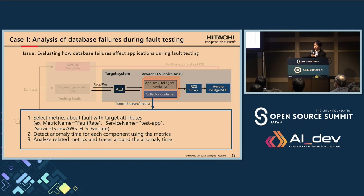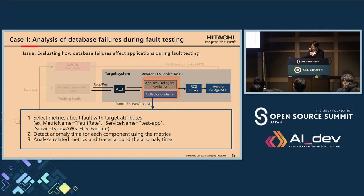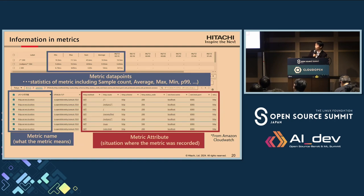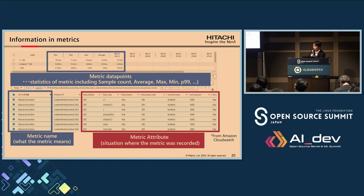The process of analyzing telemetry consists of three main steps. First, select metrics with target attributes and retrieve them from the management platform. Next, use these metrics to detect anomaly times for each component. Then analyze the related metrics and traces around the detected anomaly times in detail. Metrics consist of a name, data points, and attributes. The name indicates what the metrics data points represent, and detailed definitions and units can be found in the OpenTelemetry documentation.